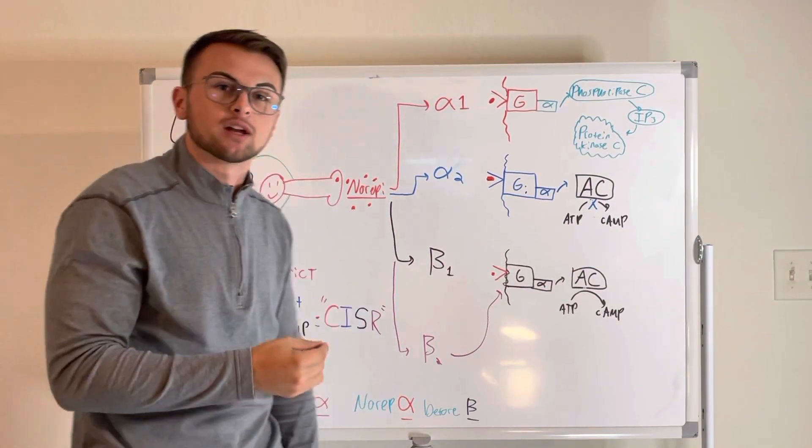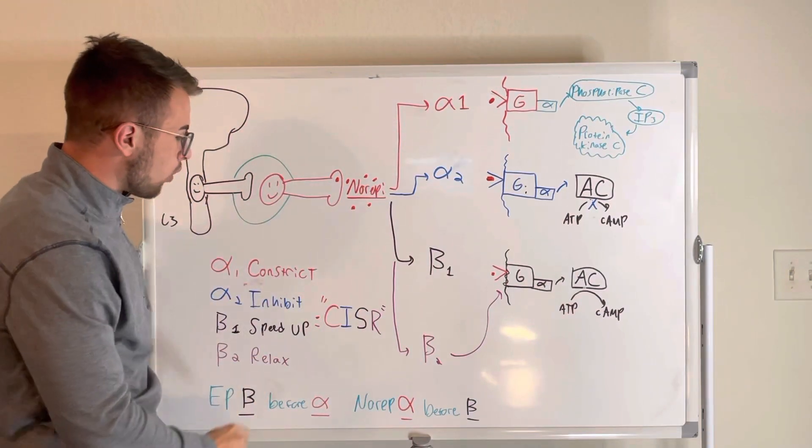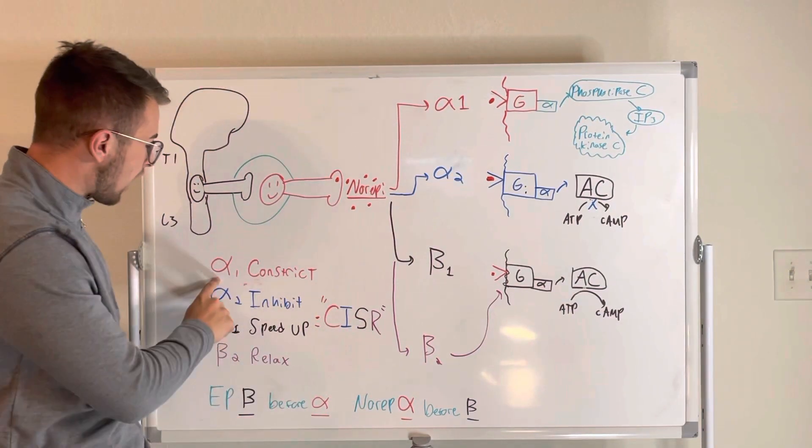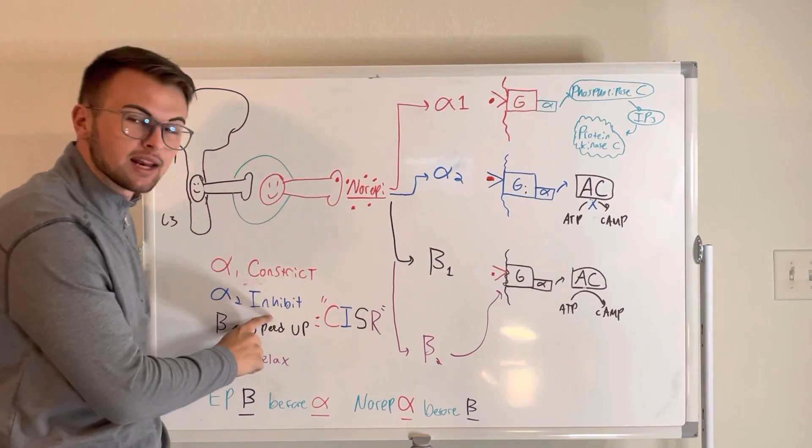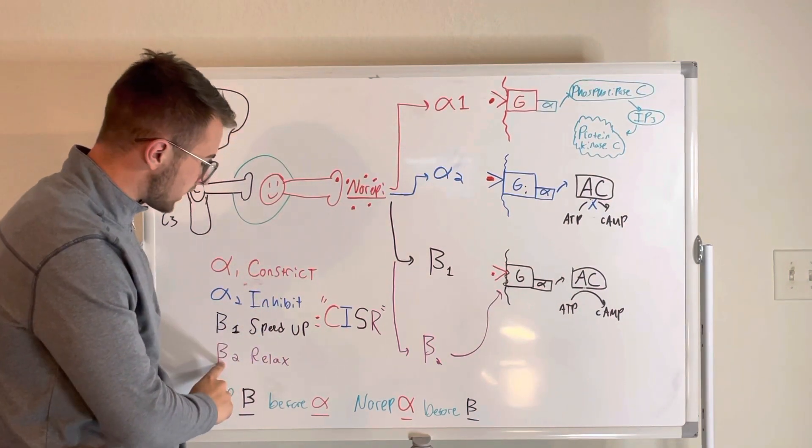So a great acronym to know is SISR: constrict, inhibit, speed up, relax. So alpha-1 constrict, alpha-2 inhibit, beta-1 speed up, beta-2 relax.